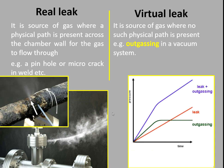The red graph indicates a real leak — pressure continuously increases. When both types of leaks are present together, the graph will be like the blue curve, which represents leak plus outgassing. Thanks for watching this video. I hope you have understood the basic concepts.